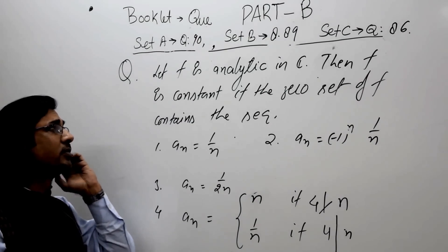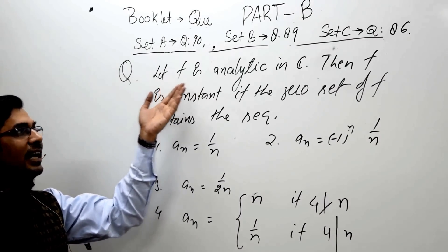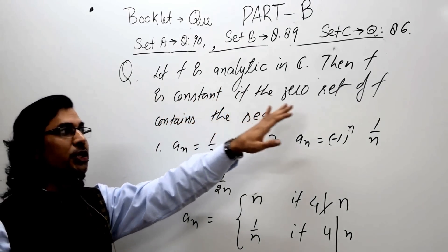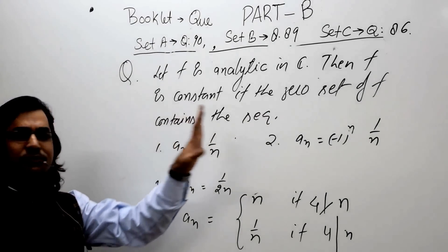The question talks about - I am just reading the question first. Let F is analytic in C. Then F is constant if the zero set of F contains the sequence, and these are the four options.